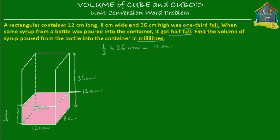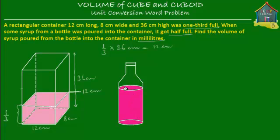So what's next? Some syrup from a bottle was poured into the container, and then the container got half full. Say that there was a bottle something like this, and this bottle had some syrup in it. Let's color the syrup — this is the syrup that's inside the bottle. Then some of this syrup was poured into this container, and that raised the level of the container to half full.